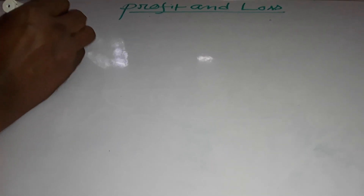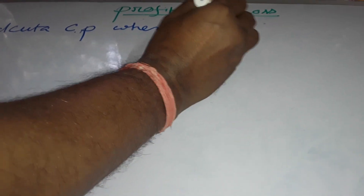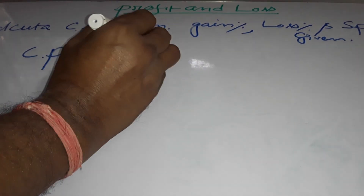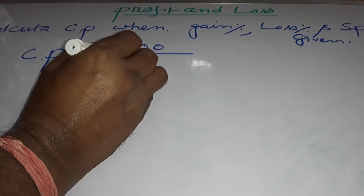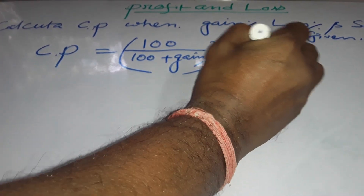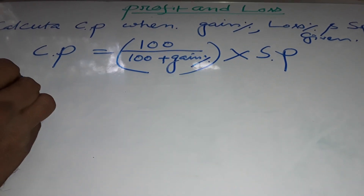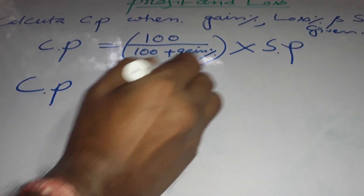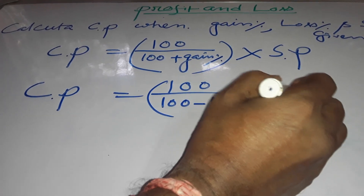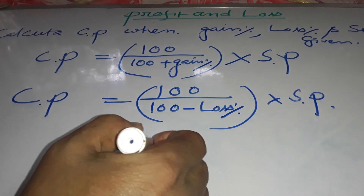To calculate CP when gain percent, loss percent, and SP are given: CP equals (100 / (100 + gain%)) × SP. Again, CP equals (100 / (100 - loss%)) × SP. Okay my dear students, end.